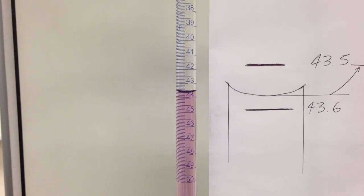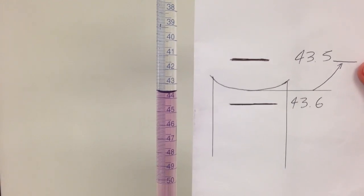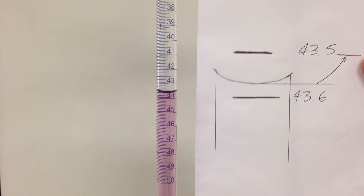Here the bottom of our meniscus lies between 43.5 and 43.6. My estimation would be 43.56 milliliters.